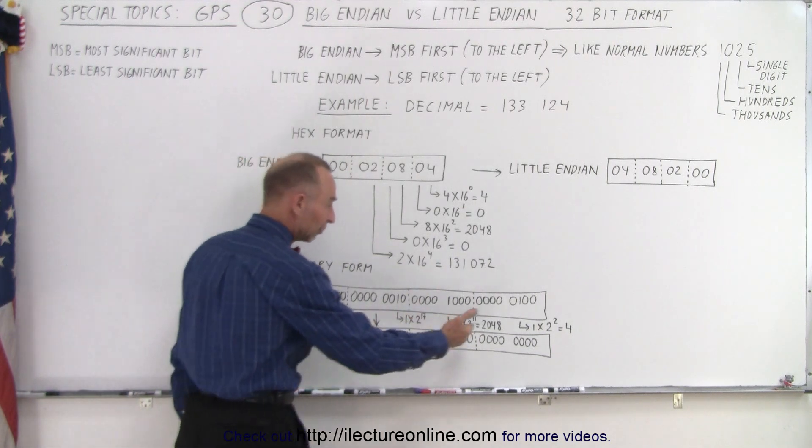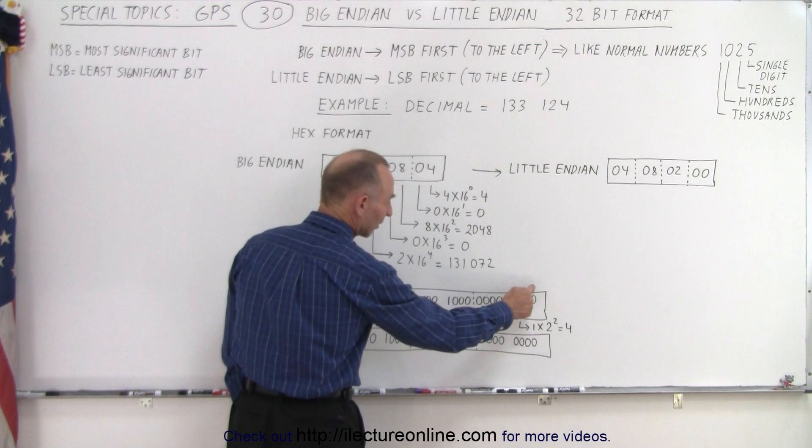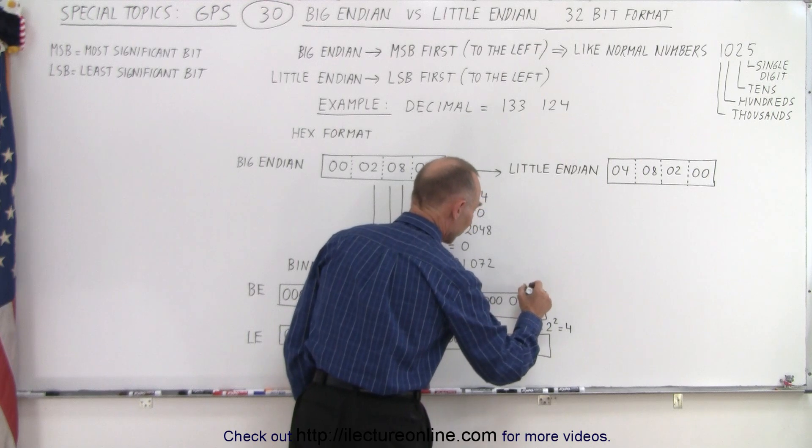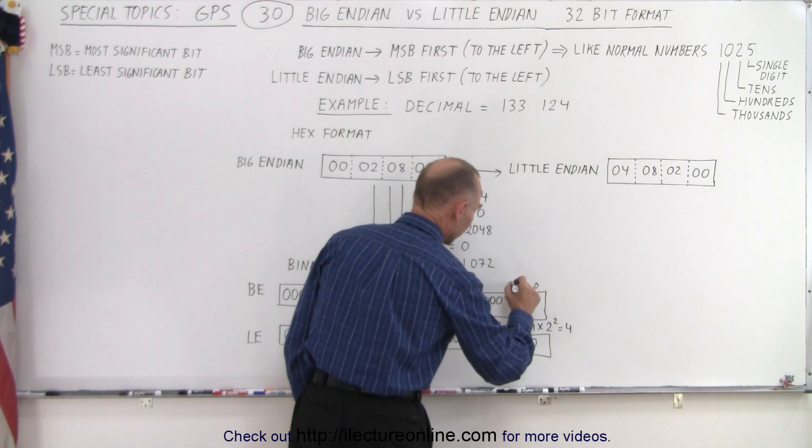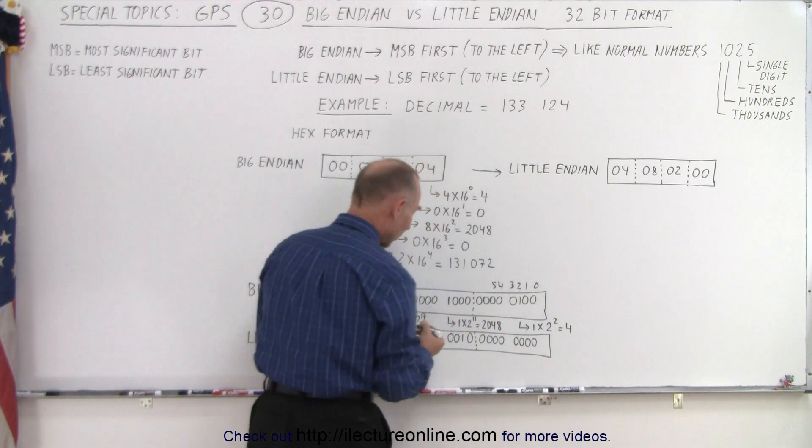Notice again in this particular format if we have it as big Endian notice that this is one times two to the second power that's a zero one second bit. So if you number them this is a zero bit, the one bit, the second bit, the third bit, should be a three, the fourth bit, the fifth bit and so forth starting from the right.